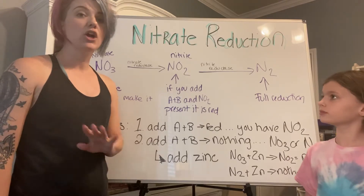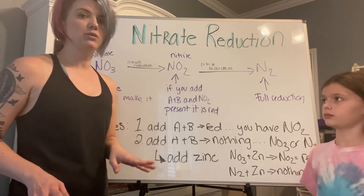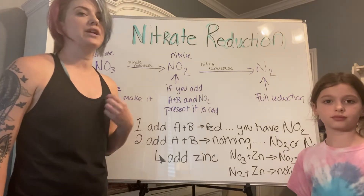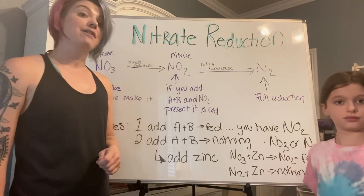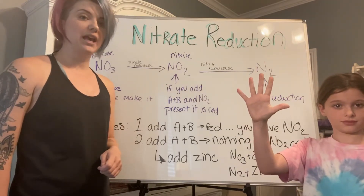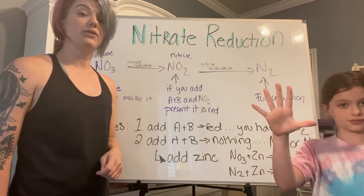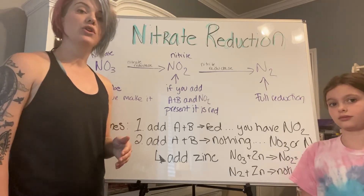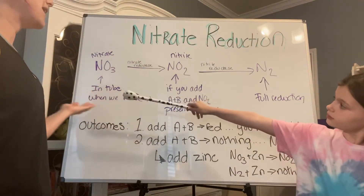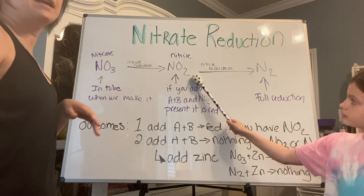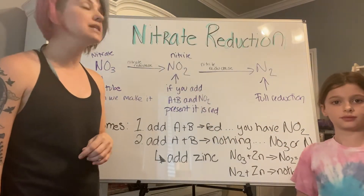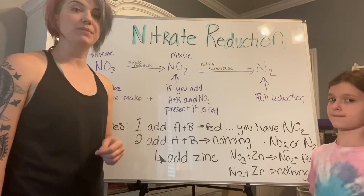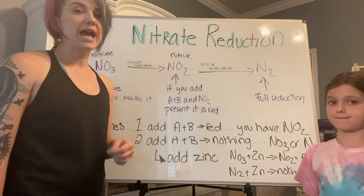If the bacteria grew, we start adding reagents. You don't need to memorize the names — just remember we have nitrate reagent A and nitrate reagent B. We add five drops of each. If your bacteria is able to reduce nitrates down to nitrites with the help of the enzyme nitrate reductase, the tube will turn red after adding reagents A and B.